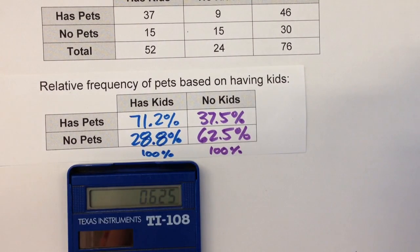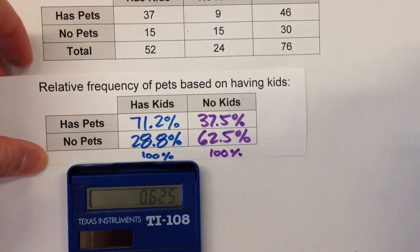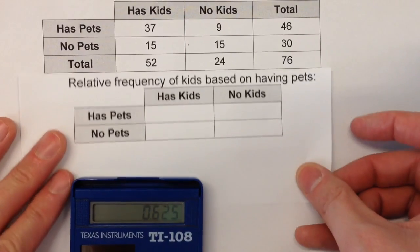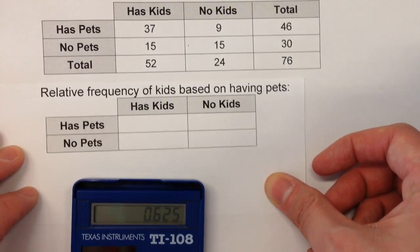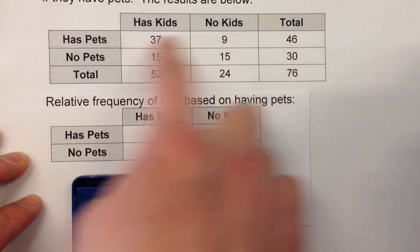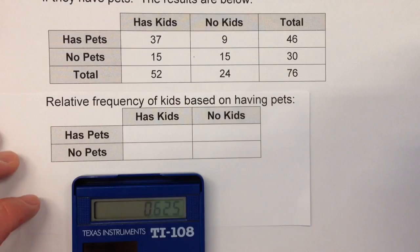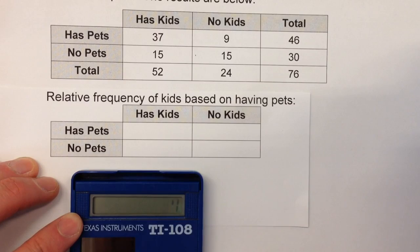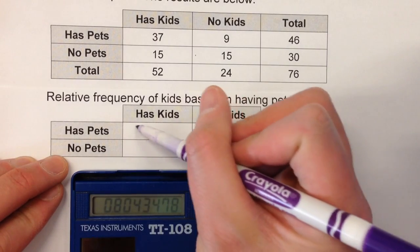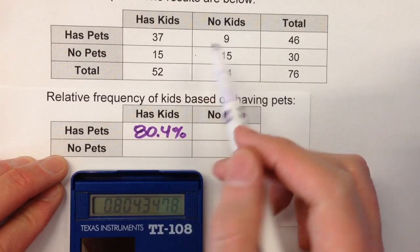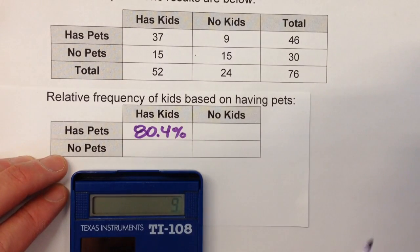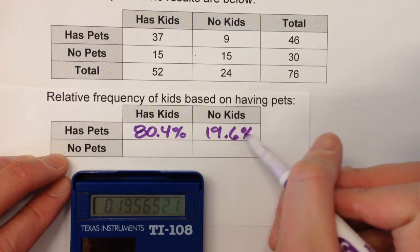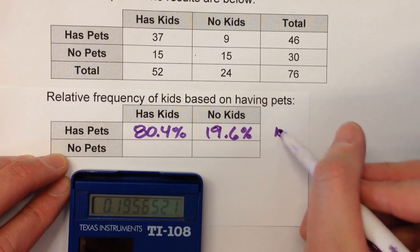The third type of relative frequency table we could make is, instead of reading it vertically, we could read it horizontally, and have it based on having pets or not. If you look at the first row — having pets — there's a total of 46, and 37 of them have kids. So it's going to be 37 out of 46, which is about 80.4%. And out of the 46, 9 have no kids, so 9 out of 46 is about 19.6%. And if you notice, the row adds up to 100%.